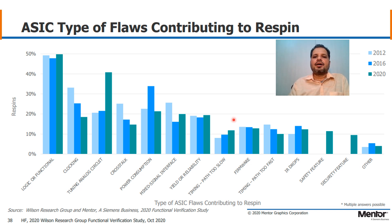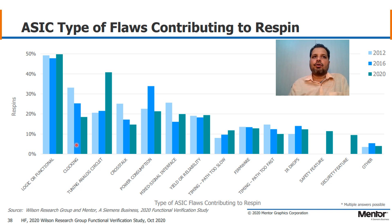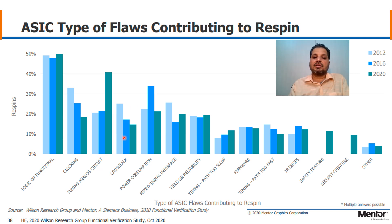This next chart summarizes the types of flaws that contribute to re-spins over three years. Logic or functional errors contribute almost 50 percent — still a very big number. Re-spins are initiated due to functional bugs. Clocking is another important area, where multiple clocks are used with power-saving schemes. Analog circuitry, especially for high-speed serial IOs, also contributes, though it doesn't directly fall under functional verification. For power consumption, we do perform low-power verification to ensure low-power schemes are working correctly.